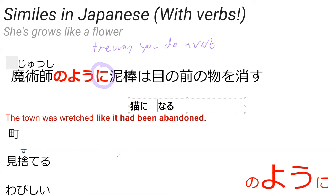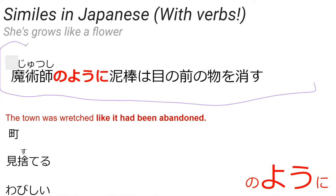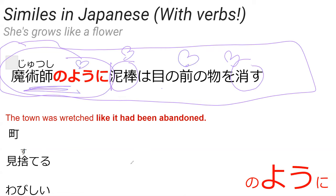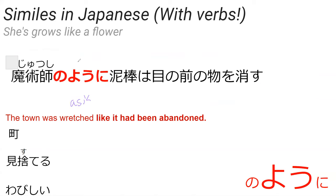Ni comes from the verb — to do the verb in this way, like a magician in this context. Can you read this sentence for me and tell me what it means? — The thief makes things disappear like a magician. — Yes, as if he was a magician, or like a magician — the thief makes things disappear right before your eyes like a magician.